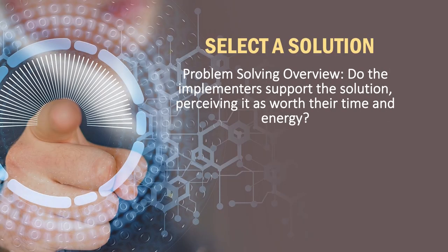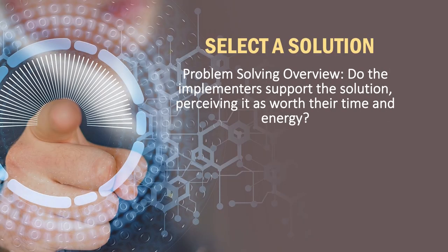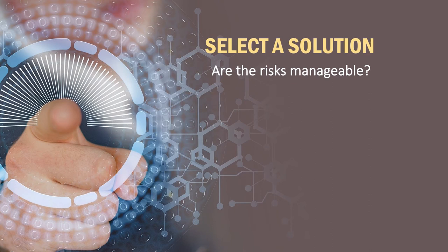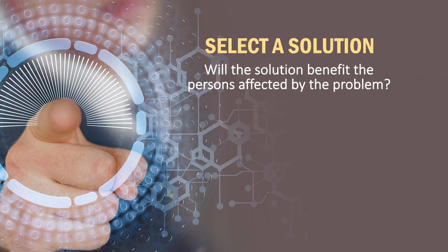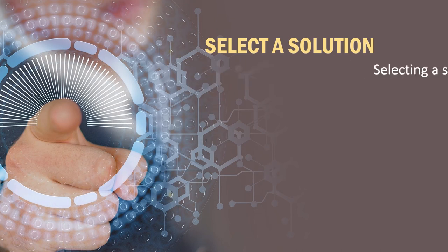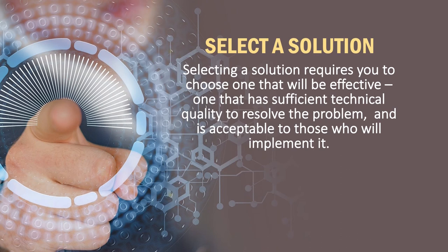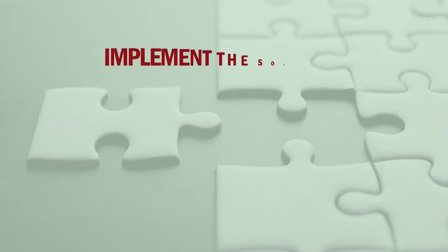Then comes the problem-solving overview of acceptability. Do the implementers support the solution, perceiving it as beneficial for their time or energy? Are the risks involved manageable? Will the solution benefit the persons affected by the problem? Will it benefit the organization? Selecting a solution requires choosing one that will be effective, has sufficient technical quality to resolve the problem, and is acceptable to those who will implement it — and then comes the implementation of the solution.